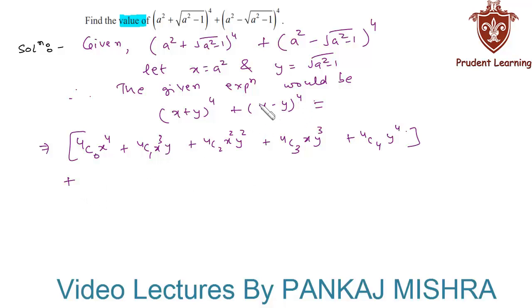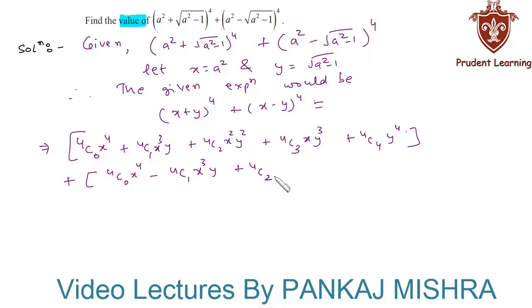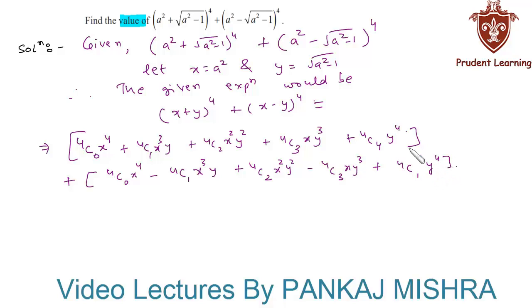Expanding (x - y)⁴ using the binomial theorem gives: 4C0·x⁴ - 4C1·x³y + 4C2·x²y² - 4C3·xy³ + 4C4·y⁴.